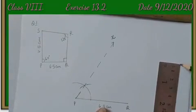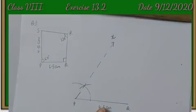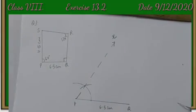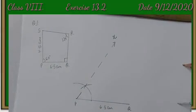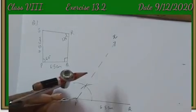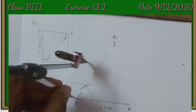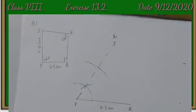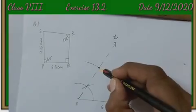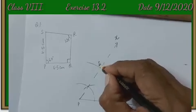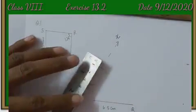Here, PS is 4.5 cm, so we will measure it with compasses and cut an arc of 4.5 cm with center P. The intersecting point of this arc and the ray PX is point S.